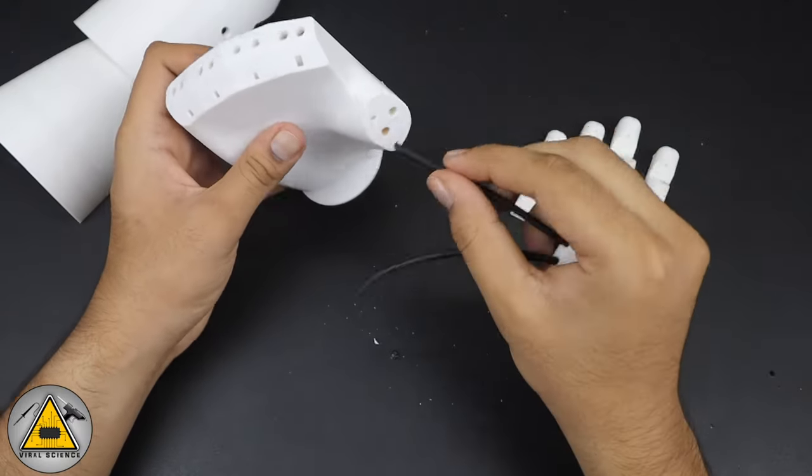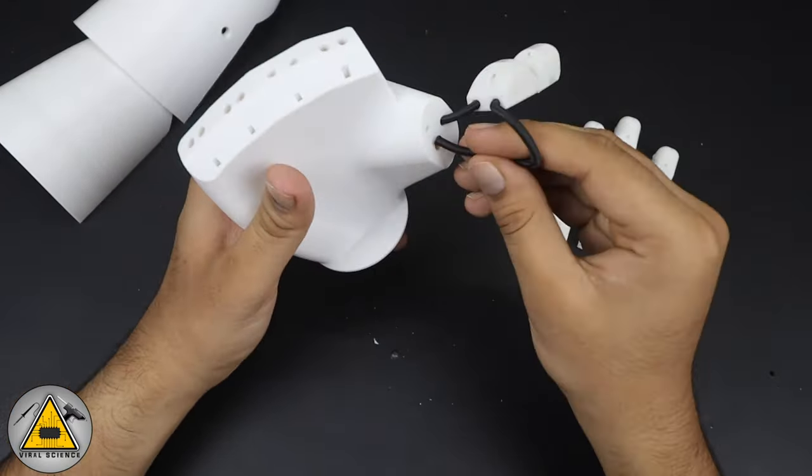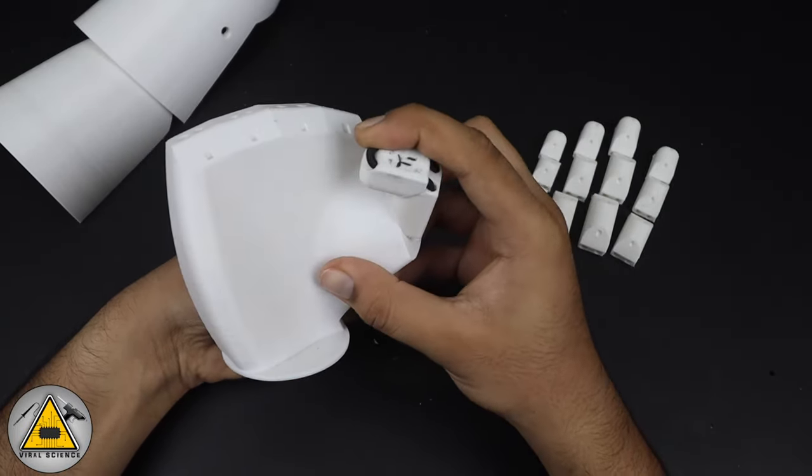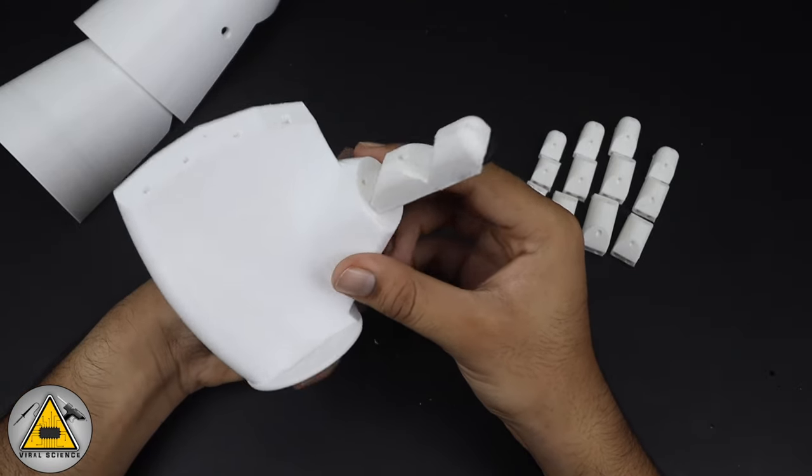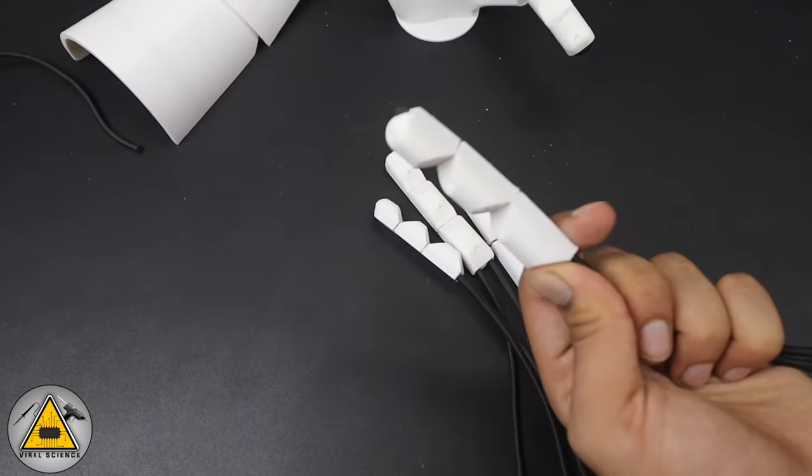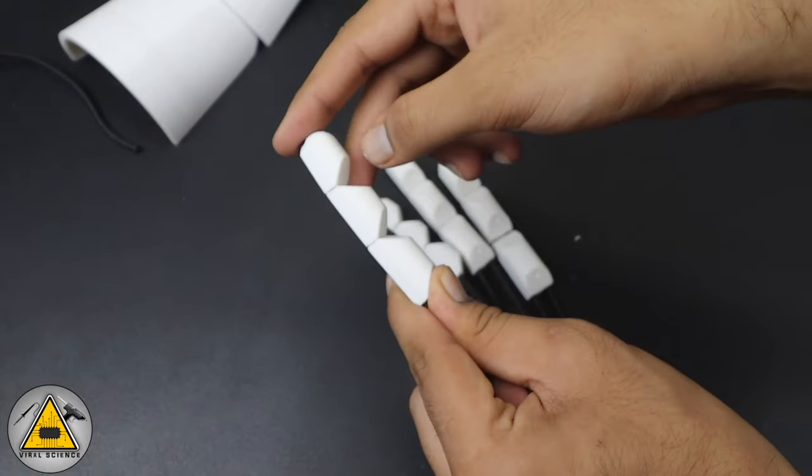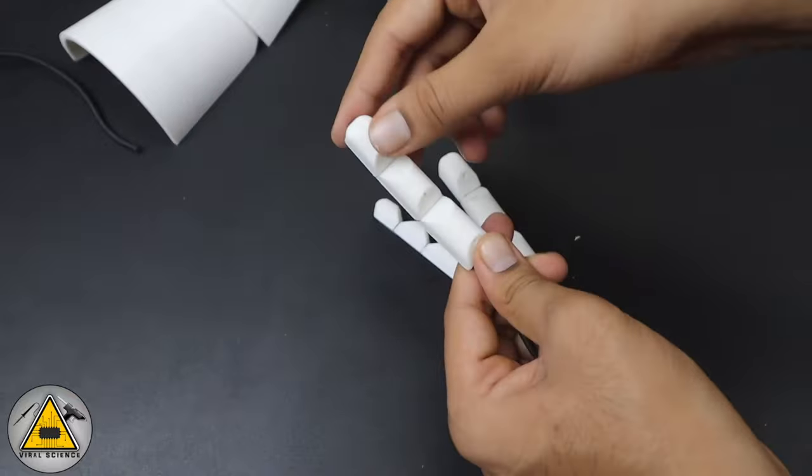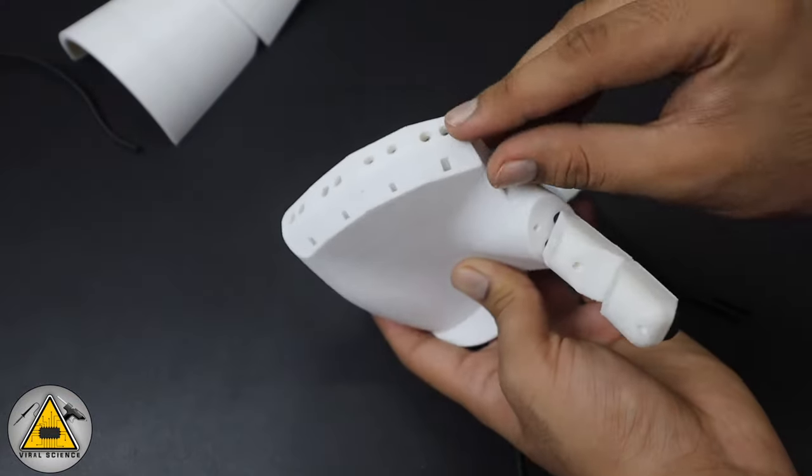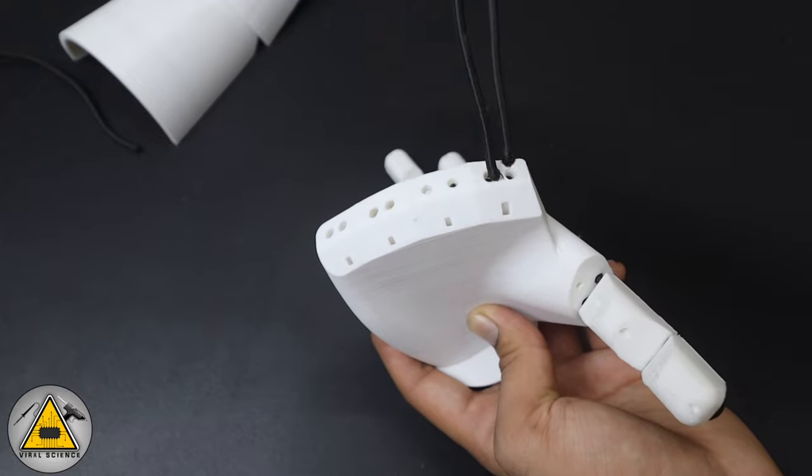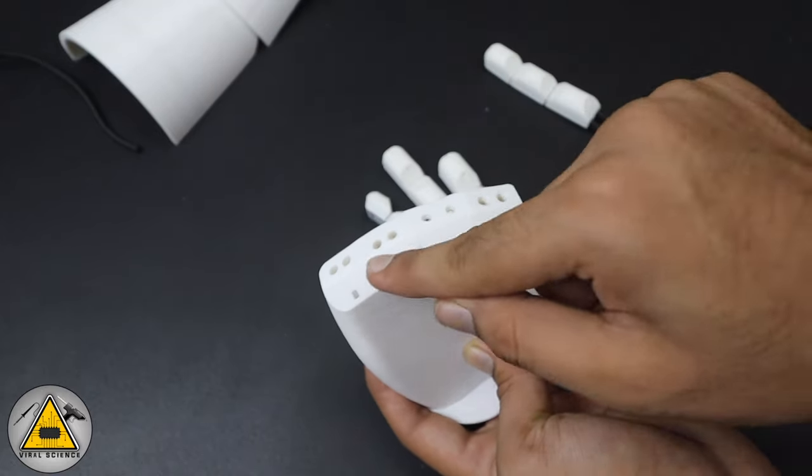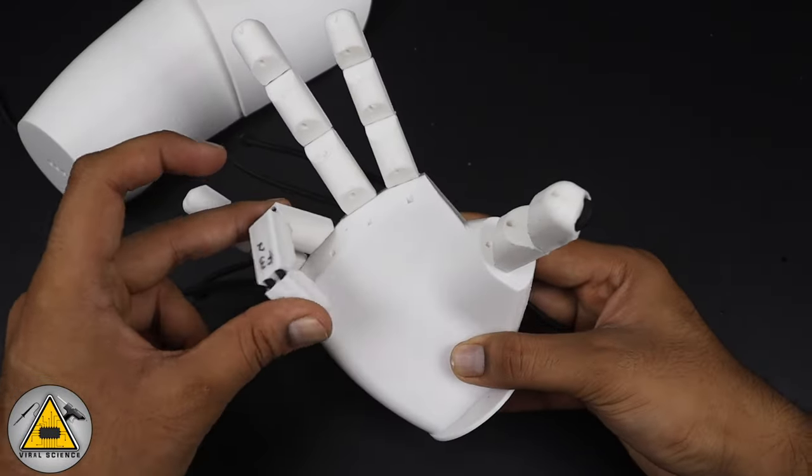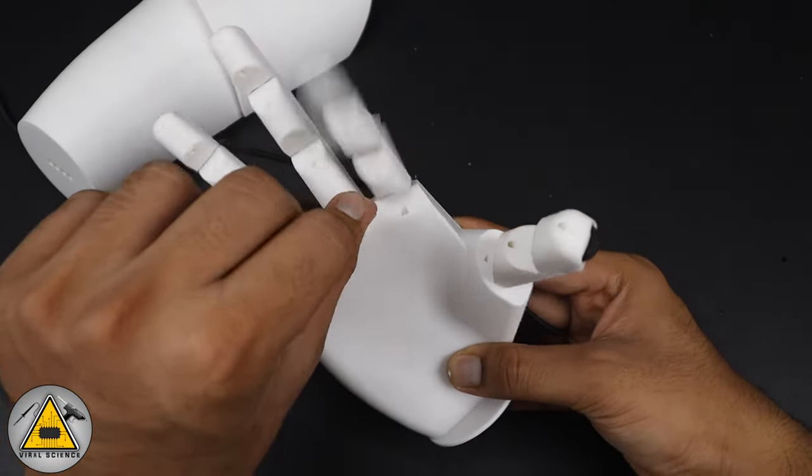Similarly we'll connect this to our main hand. We'll pass this elastic band from the holes and we'll tie a knot on the back side. So you can see in the video, now all the fingers and the thumb is working perfectly.